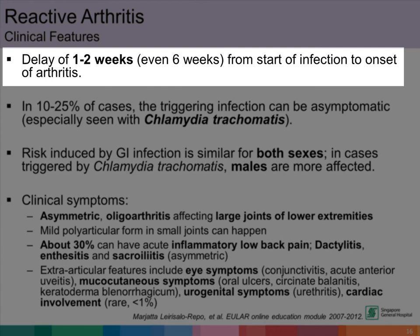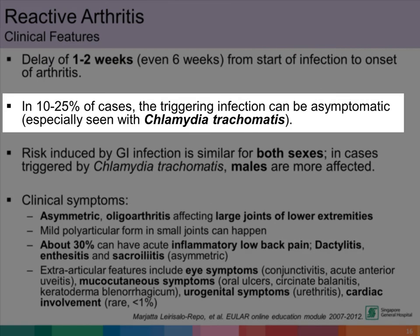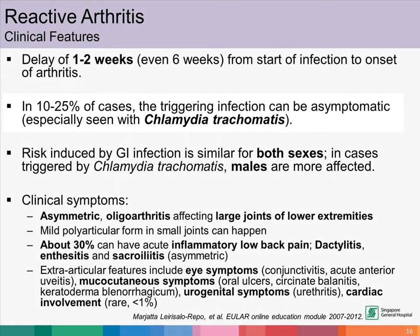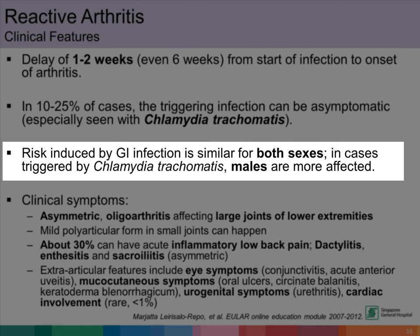The onset of reactive arthritis usually happens 1 to 2 weeks from the start of infection. It is important to recognize that in a small group of 10 to 25 percent of cases, the triggering infection can be asymptomatic. This is usually seen with infections caused by Chlamydia trachomatis. The risk induced by GI infection is the same for both sexes, although in cases triggered by Chlamydia trachomatis, males are more likely to develop reactive arthritis.